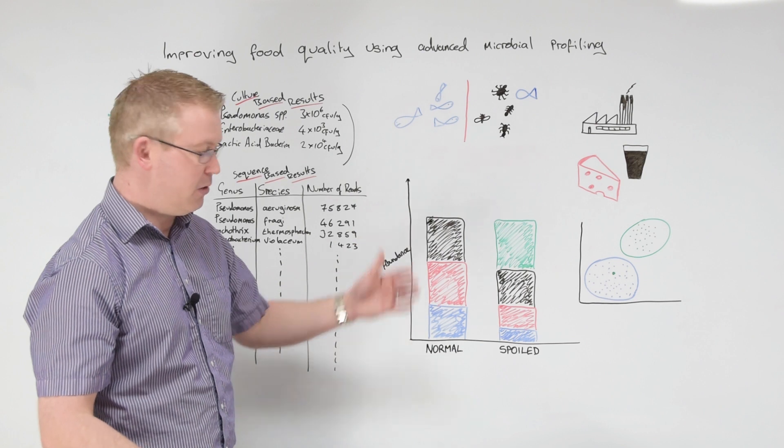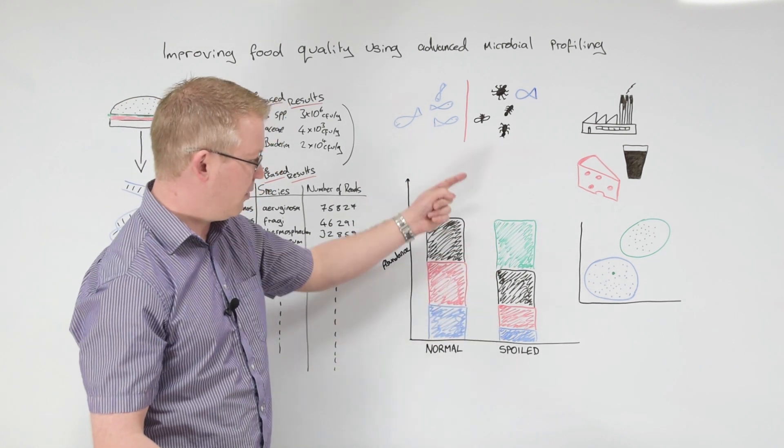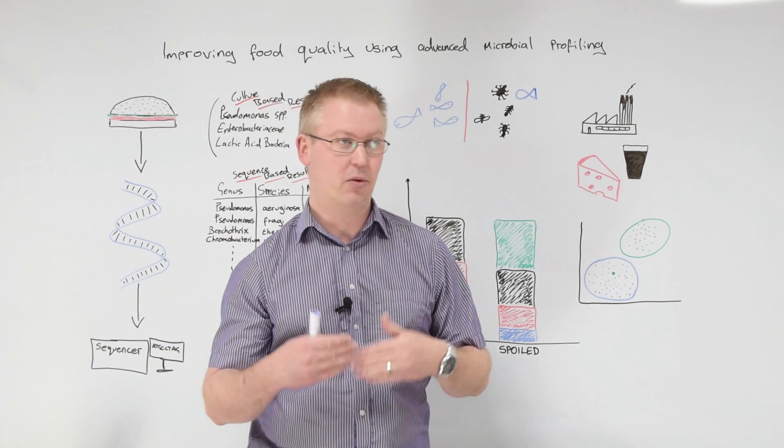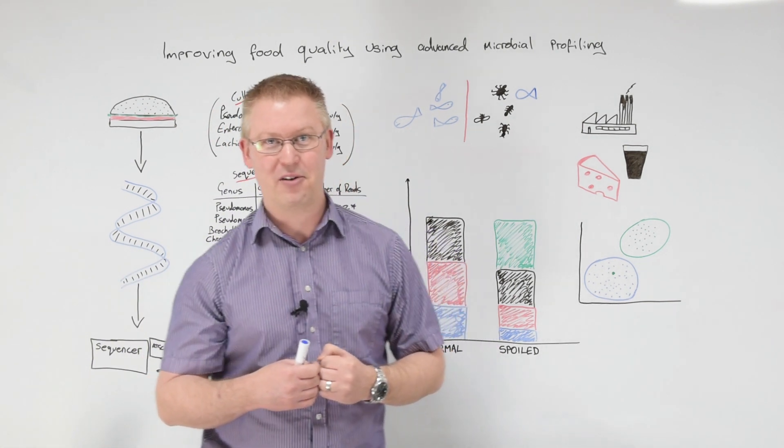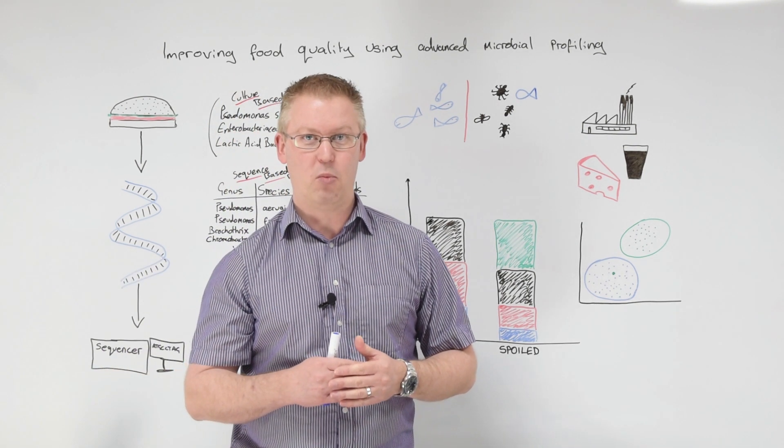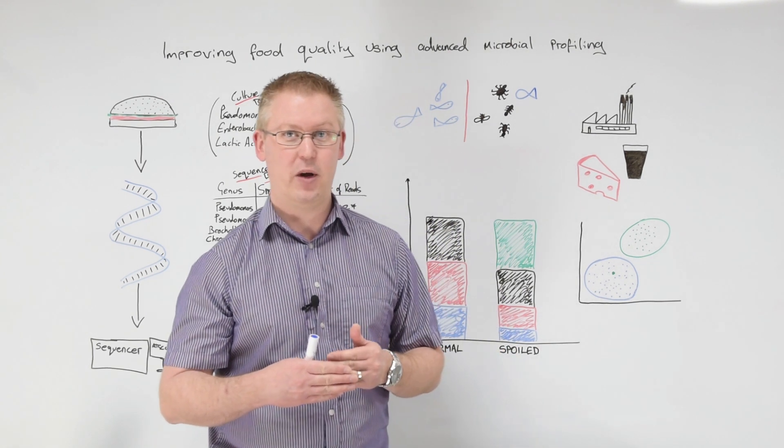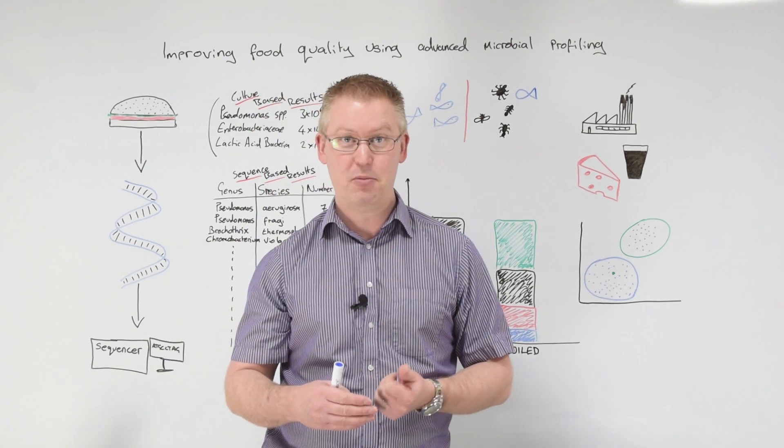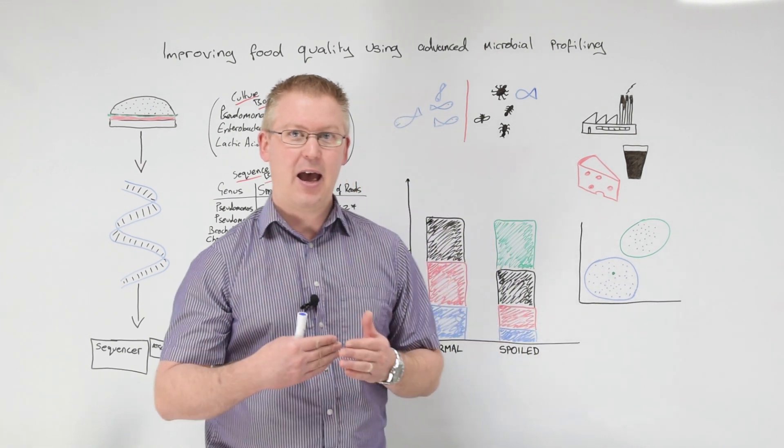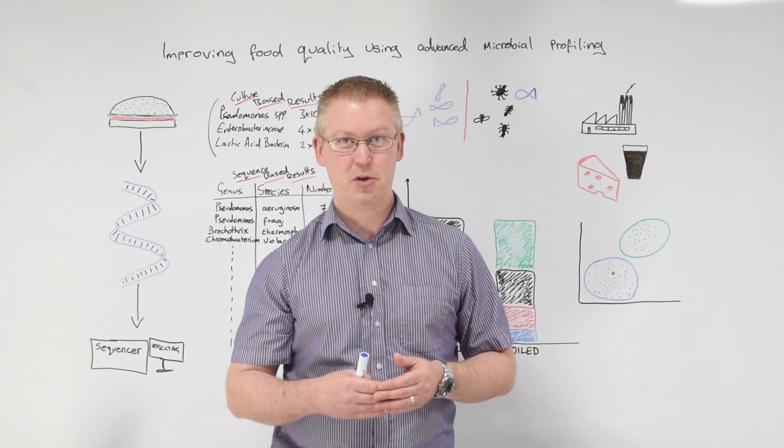And here's essentially what we found. So we found a normal profile and we found a spoiled profile. And we found a different profile to what we were expecting. So we found that big green blob on my graph there. Now, when we came to look at what the big green blob was, then we found that it was an organism called Arthrobacter, which is an obligate aerob. So it requires the presence of oxygen in order to be able to grow. And it is noted for its production of blue pigments, which told us two things.